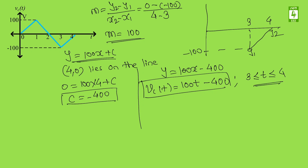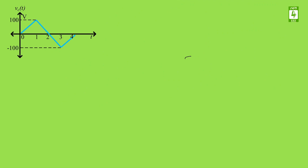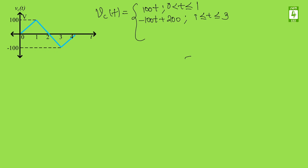Now we are done with the voltage lines. Collecting all equations: voltage = 100t from 0 to 1; voltage = -100t + 200 from 1 to 3; and voltage = 100t - 400 from 3 to 4. These are the voltage equations. Now we simply differentiate these voltage equations with respect to time.